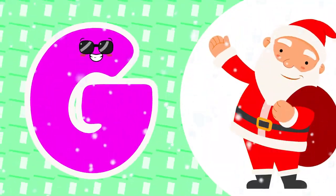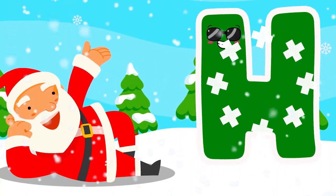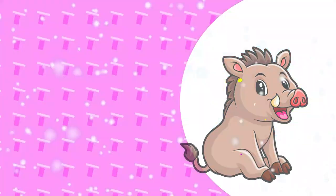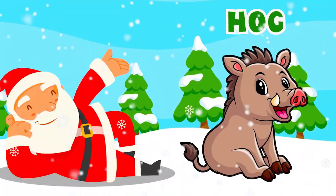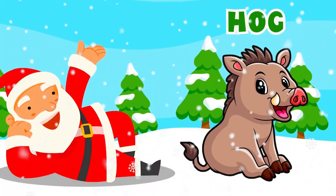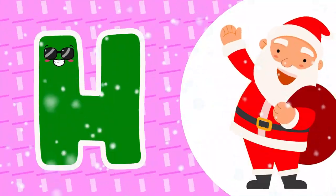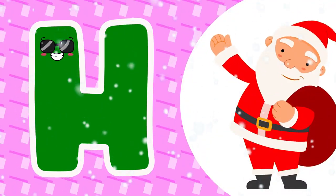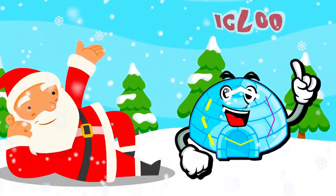G is for goldfish. G, g, goldfish. H is for hog. H, h, hog. All our phonics sounds, ready, let's go!